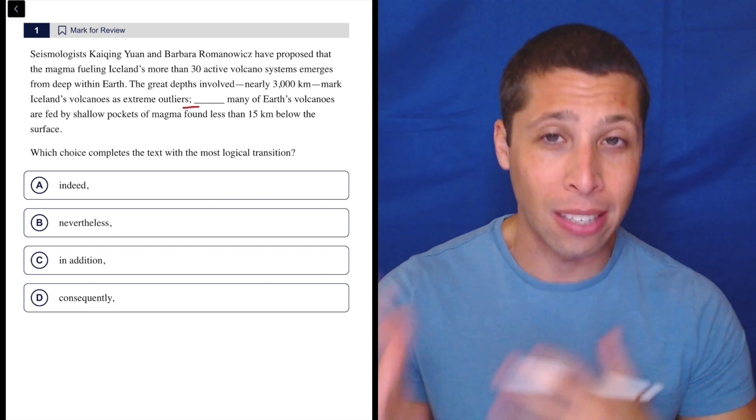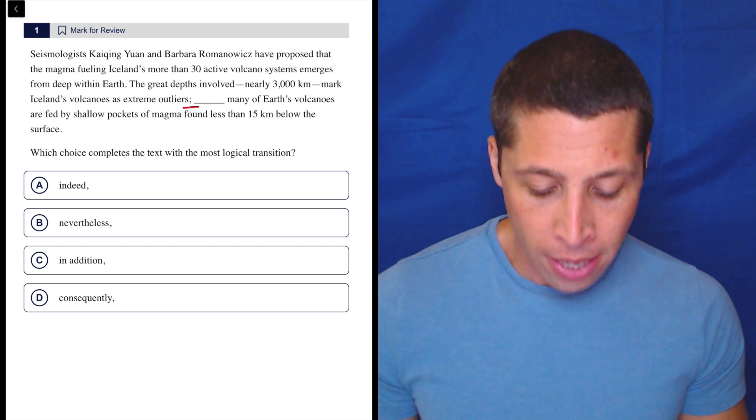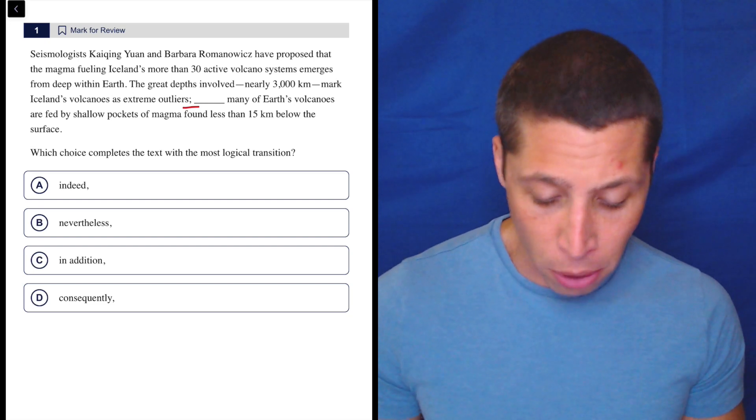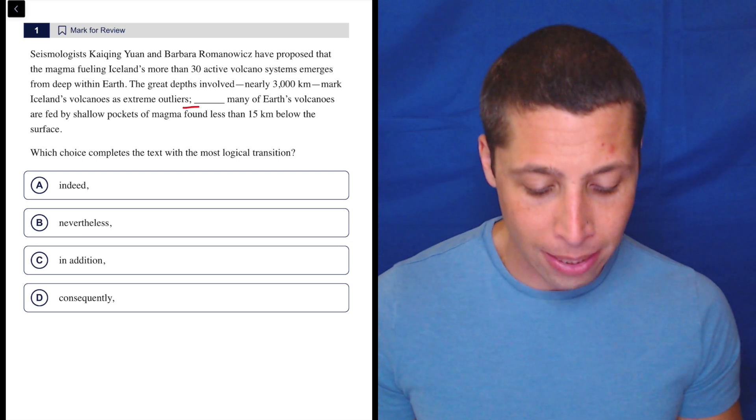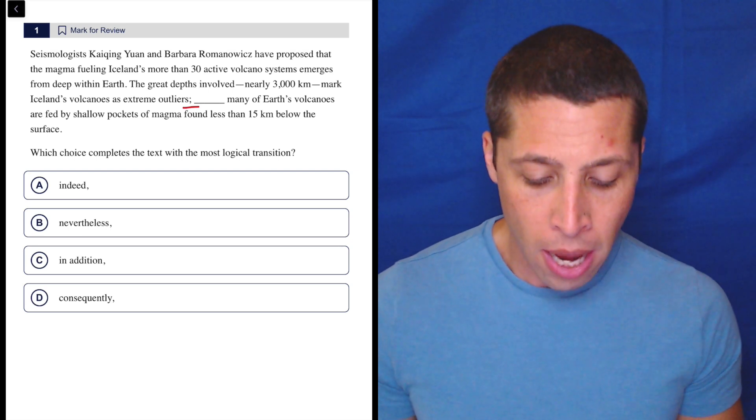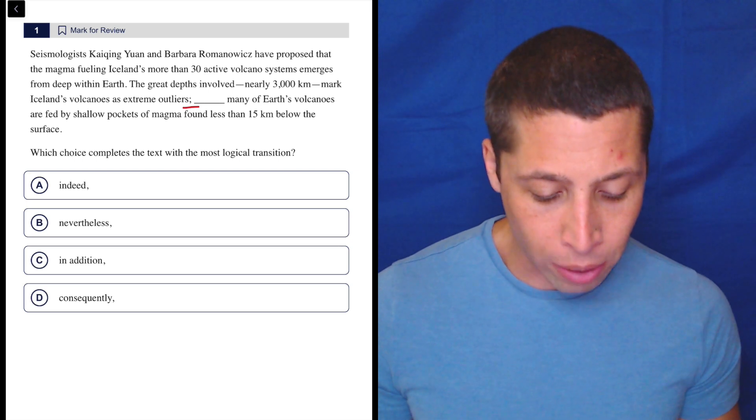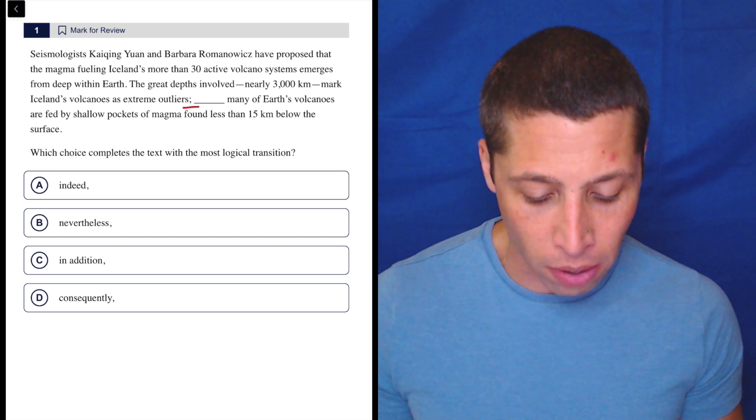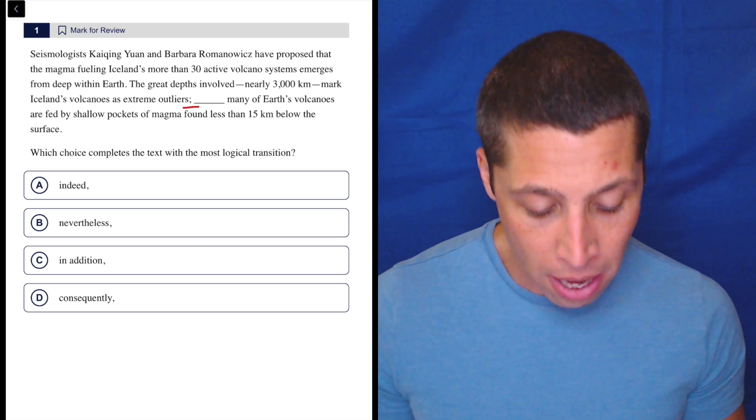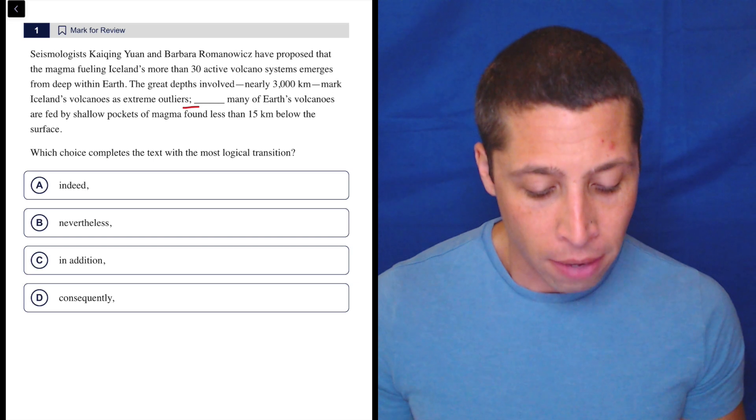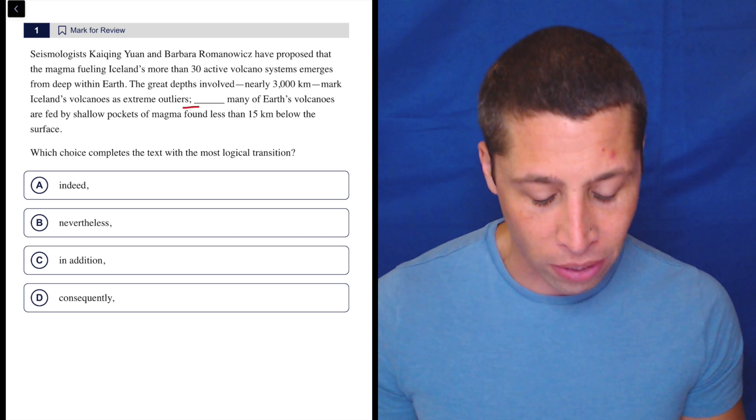So let's look at the sentences, see if we can get some sense of what's going on. Now, seismologists have proposed that the magma fueling Iceland's more than 30 active volcano systems emerges from deep within Earth. The great depths involved mark Iceland's volcanoes as extreme outliers. Many of Earth's volcanoes are fed by shallow pockets of magma found less than 15 kilometers below the surface.